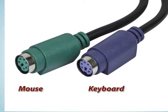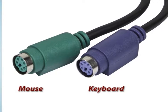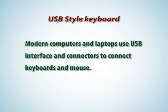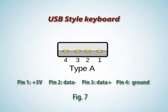Pin 2 and pin 6 are not used on the keyboard and hence can be used for mouse data and clock. The PC 97 standard dictates that the keyboard jack on the PC and male plugs must be purple colored, and the mouse jack and plugs must be green colored. USB style keyboard: Modern computers and laptops use USB interface and connectors to connect keyboard and mouse. The USB connector is called a Type A connector, shown in figure 7. It has 4 pins: pin 1 plus 5 volts, pin 2 data minus, pin 3 data plus, pin 4 ground. USB connectors and signals are standard for all peripherals, whether keyboard, mouse, serial port, or any other device.